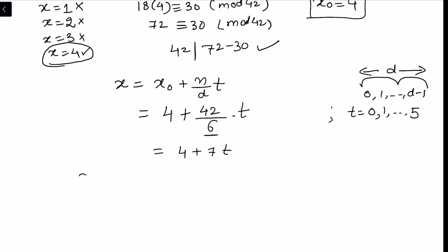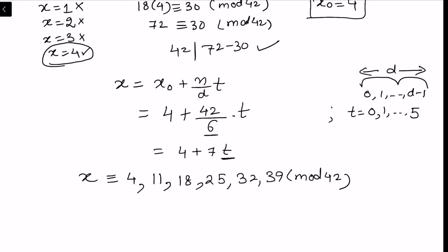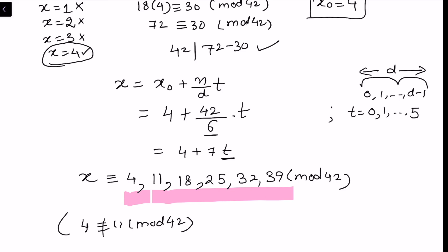The 6 incongruent solutions modulo 42 are: 4, 11, 18, 25, 32, and 39. We can verify these are incongruent: for instance, 4 is not congruent to 11 modulo 42, and similarly none of the others are congruent to each other.